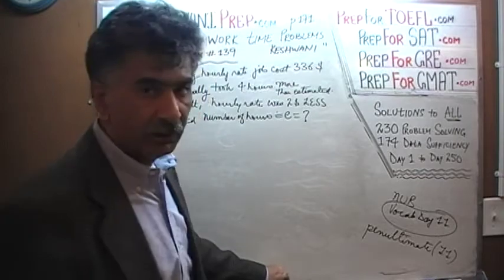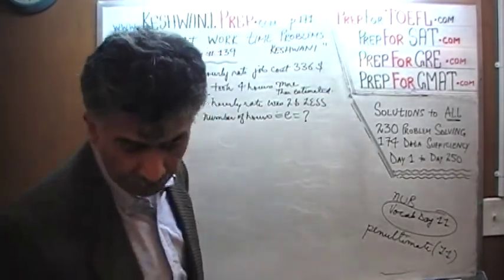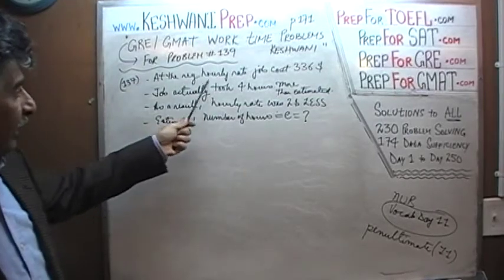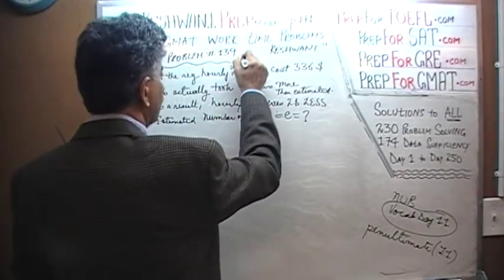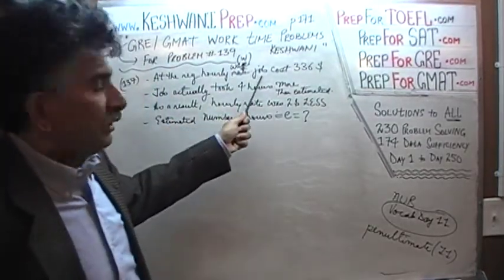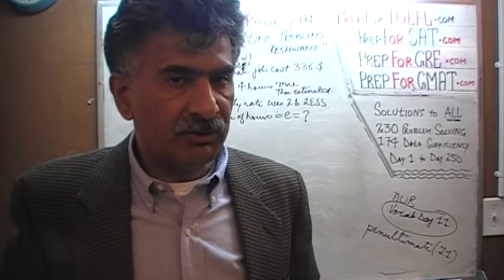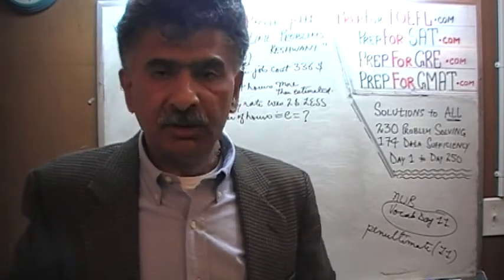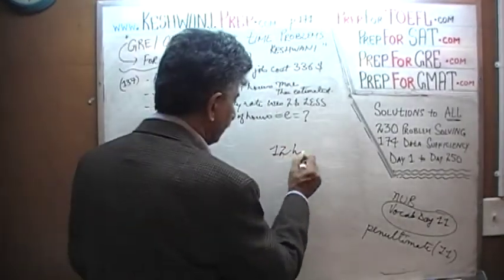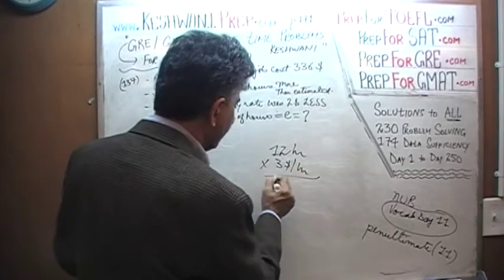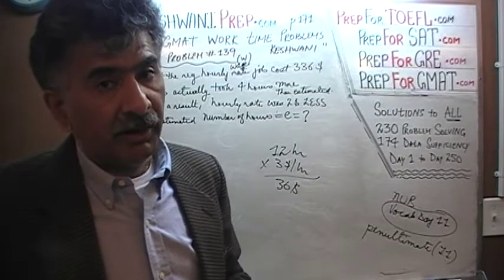So right now we are going to do number 137 and 138. Let's take a look at 137. In 137 we are told that this person took on a job, and we are told that it is a regular hourly wage — I am going to call it wage. We are going to use W to represent his hourly wage. At his regular hourly wage, the job would have cost $336. So what happened was that you hired this contractor. The contractor estimated how long the job will take, multiplied his hourly wage by the estimated amount of time.